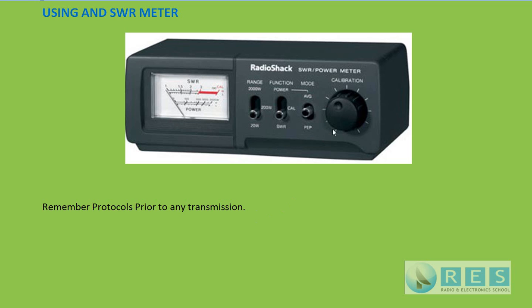Here is a typical SWR meter. I'm just going to run through the controls quickly because most of them you don't need to know. This is a power meter as well, so it can be set to measure 0 to 20 watts, 0 to 200 watts, or 0 to 2000 watts. This control is simply whether we want to measure average power or peak power. These two controls don't really have anything to do with the functioning of the SWR meter — if you want to use it as a power meter you'd put the switch onto power.